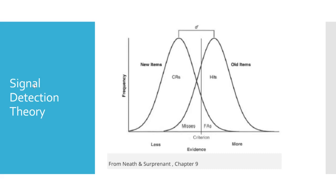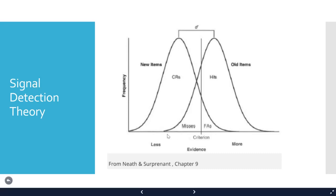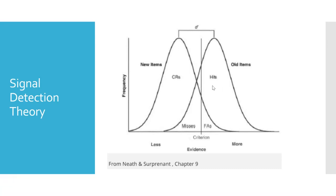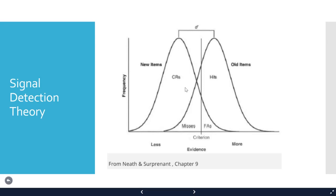There are two key components to signal detection theory. First is memory trace strength, plotted along the x-axis — you could have weak memories and stronger memories. The old item distribution is on average a little bit stronger in memory strength, sitting slightly to the right compared to the new item distribution. This version of signal detection assumes both distributions are normal or Gaussian and that they are equal in variance.